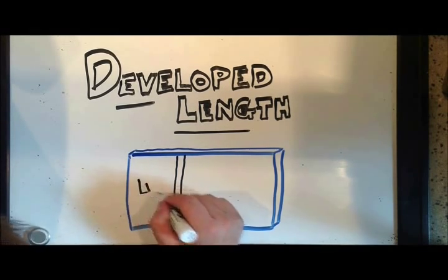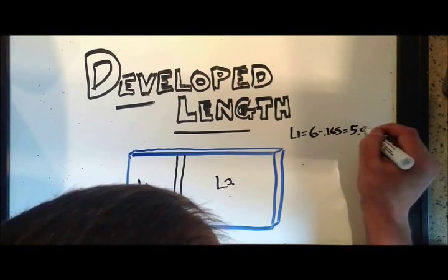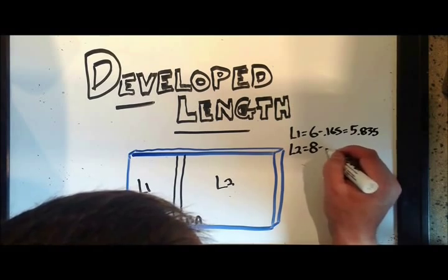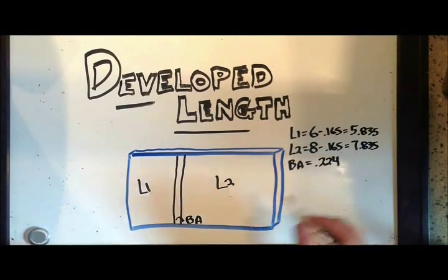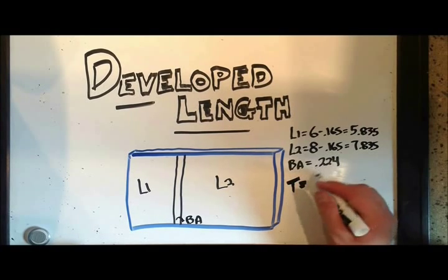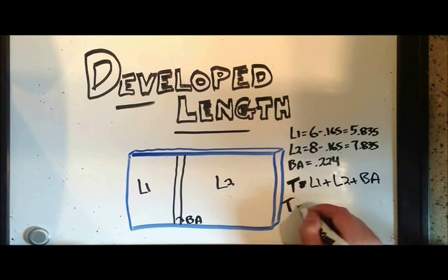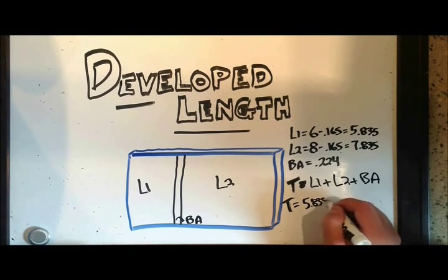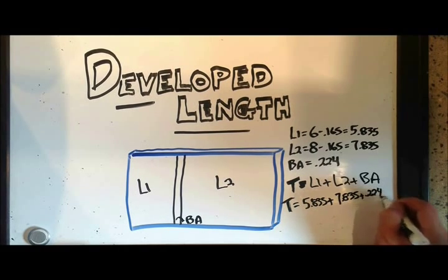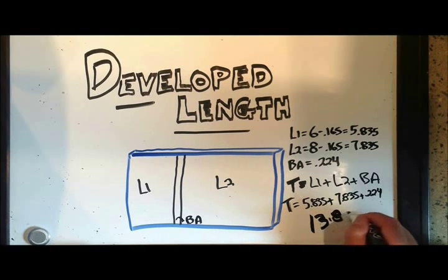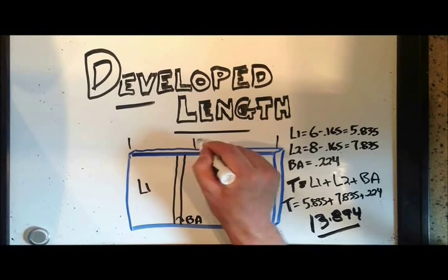So we have the two individual flat sections and we have the bend allowance. There's our bend allowance, BA, and we have leg one and leg two. So leg one is the desired length, or the drawing length of six minus 0.165. The other leg is eight minus 0.165. And by the bend allowance chart, we found out that our bend allowance is 0.224. So the total length is the sum of length one plus length two plus our bend allowance. So in this case, it's 5.835 plus 7.835 plus 0.224. Giving us a total of 13.894. See, we saved some material.